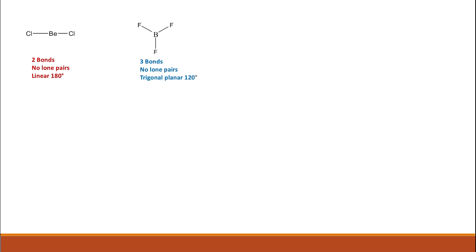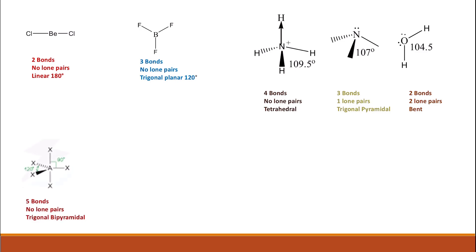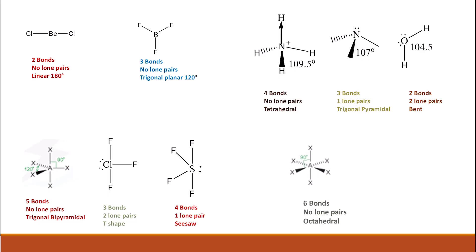A quick recap of molecular shapes: two bonds, no lone pair — linear; three bonds, no lone pair — trigonal planar at 120°; four bonds, no lone pair — tetrahedral; three bonds, one lone pair — trigonal pyramidal; two bonds, two lone pairs (like water) — bent; five bonds, no lone pair — trigonal bipyramidal; three bonds, two lone pairs — T-shaped; four bonds, one lone pair — see-saw; six bonds, no lone pair — octahedral; four bonds, two lone pairs — square planar.